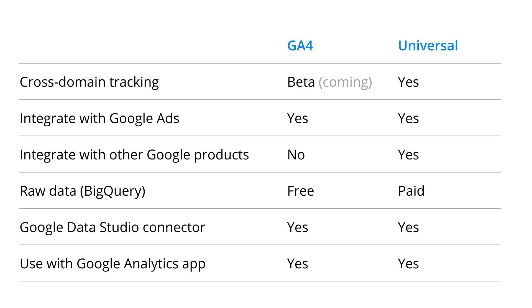Cross-domain tracking is coming. You can link Google Analytics 4 properties to Google Ads, although you can't link other products like Google Search Console — I'm hoping to see this in the future. You can store a raw copy of your data using Google BigQuery, and you can pull data into Google Data Studio and access your reports using Google's app. That's a quick summary of the current differences between Google Analytics 4 and Universal Analytics properties.